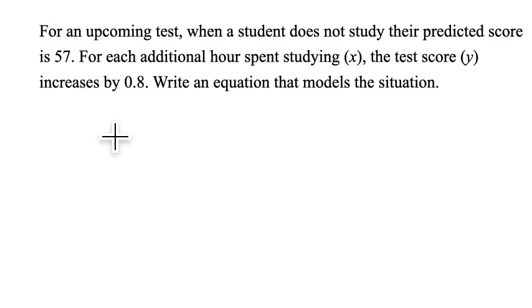For an upcoming test, when a student does not study, their predicted score is 57. For each additional hour spent studying x, the test score y increases by 0.8. Write an equation that models the situation. We have y equals mx plus b. For each additional hour spent studying, the test score increases by 0.8, so that's our rate of change. That's how much the score is going up for each hour spent studying. We have y equals 0.8 times x, the rate of change times the number of hours, plus the starting point which is 57. That's the predicted score for a student that doesn't study. So the predicted test score equals 0.8x plus 57.